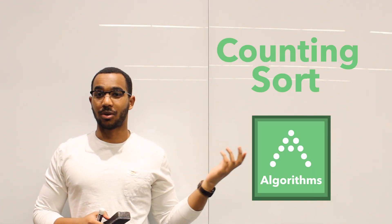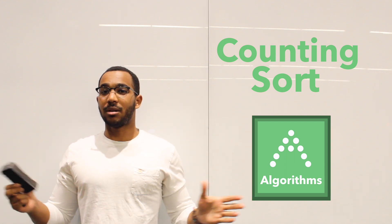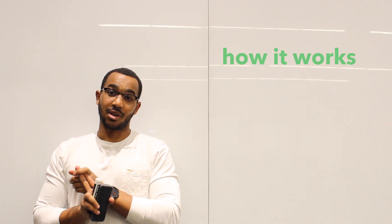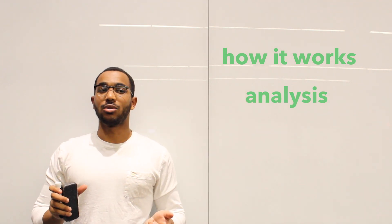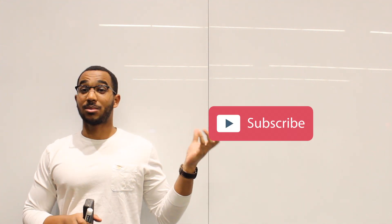Today we're going to talk about an algorithm called counting sort. This is going to be pretty straightforward, pretty simple, nothing too difficult. We're going to look at how counting sort works and analyze counting sort's exact number of operations. If you have not subscribed to the channel, subscribe and like the video. So what is counting sort?